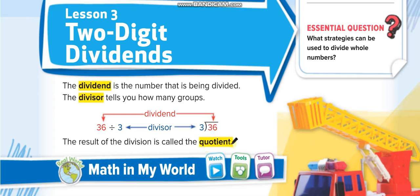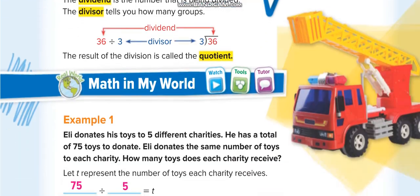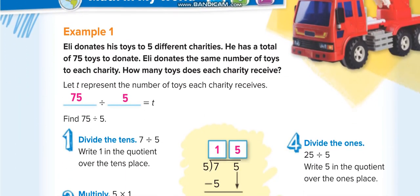Let us solve the examples here. First example: Ellie donates his toys to five different charities. He has a total of 75 toys to donate, so we will divide 75 with 5.